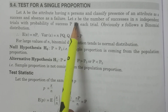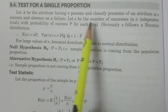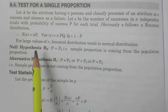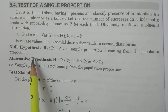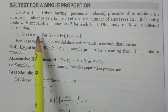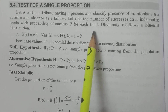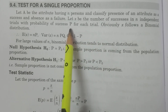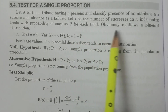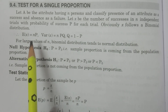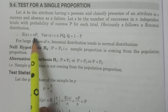Let us consider x — small x — as the number of successes in n independent trials. Out of n trials, x is the number of successes; that is, the remaining n minus x is the number of failures. With the probability of success, capital P, for each trial — this is constant, that is called a parameter. Therefore, x follows a binomial distribution with parameters small n and capital P.